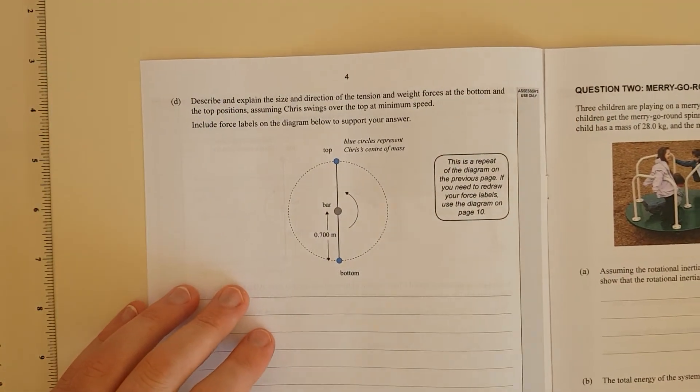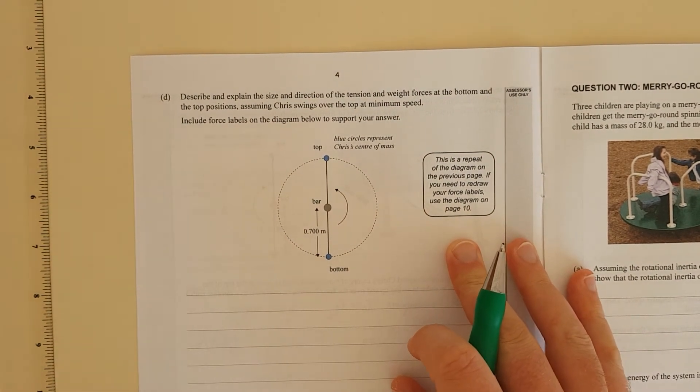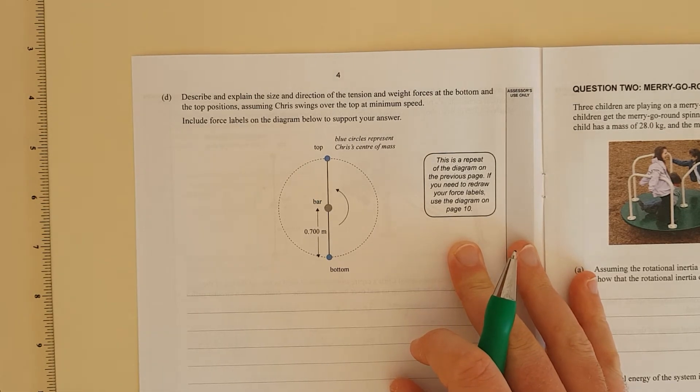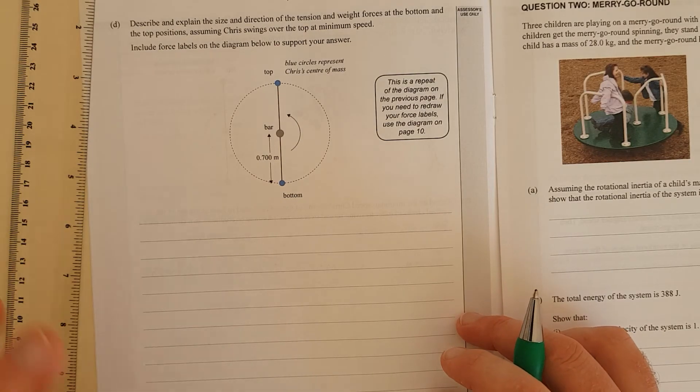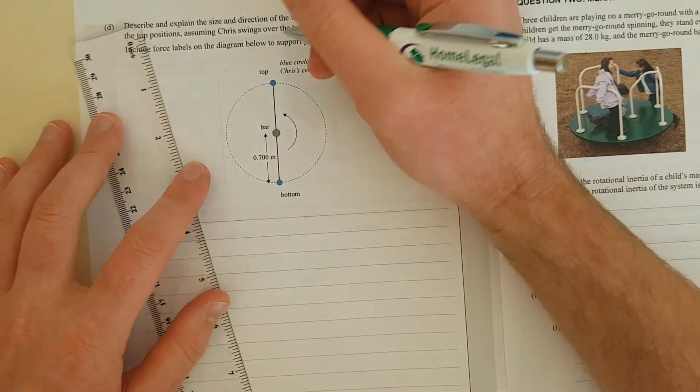Hey look at that, it is. Describe and explain the size and direction of the tension and weight forces at the bottom and top positions, assuming Chris swings over at the minimum speed. Include labeled forces on the diagram below to support your answer.